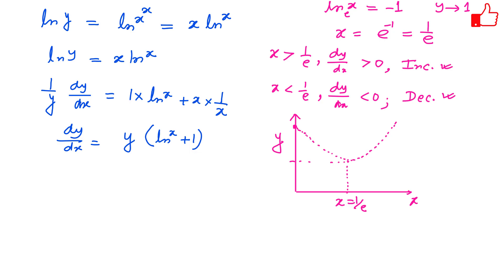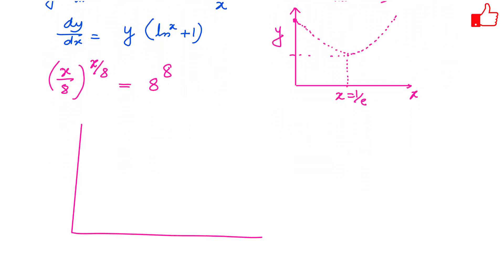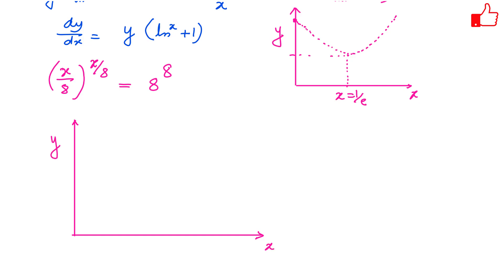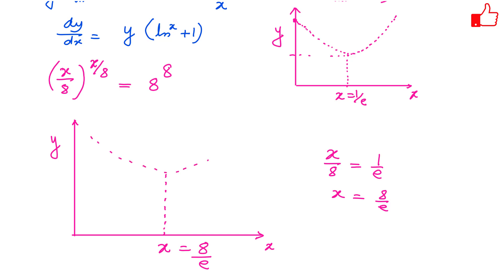Similarly, for the function x over 8 raised to the power x over 8, we get a very similar graph. In place of x we have x over 8, so the critical point shifts: x over 8 equals 1 over e gives x equals 8 over e. So this function has a minimum at x equals 8 over e, with the same decreasing-then-increasing shape.